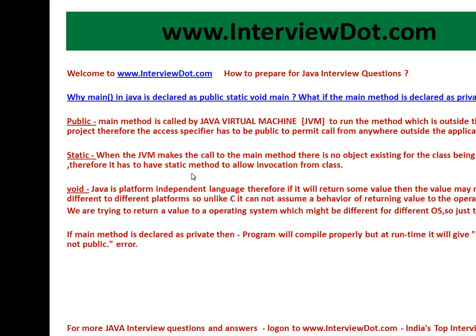Let's talk about why it is public. The main method is called by the Java Virtual Machine whenever you run the application — for example, when you say 'java com.mx.sample' or 'HelloWorld'. It will be called by the JVM to run the method, which is outside the application, outside the scope of the project. Therefore, the access specifier has to be public to permit a call from anywhere outside the application.